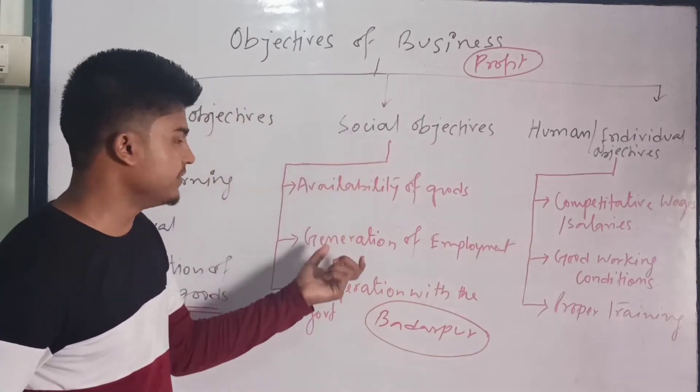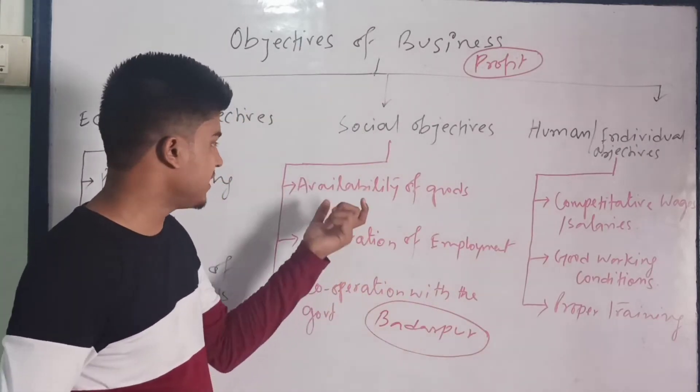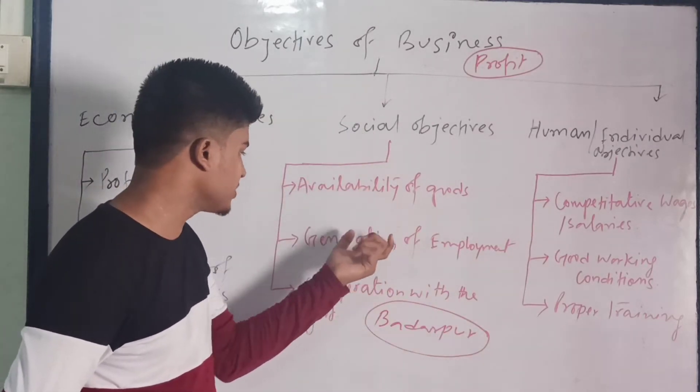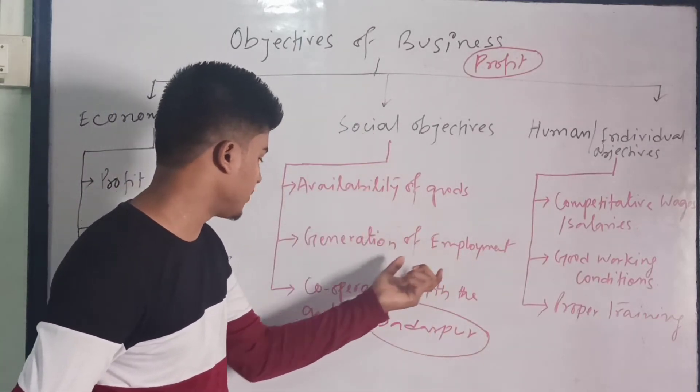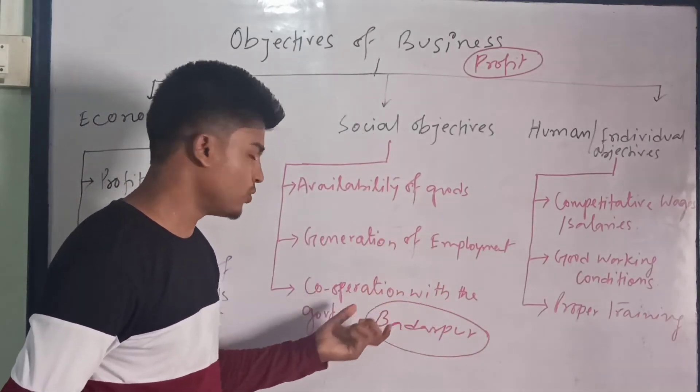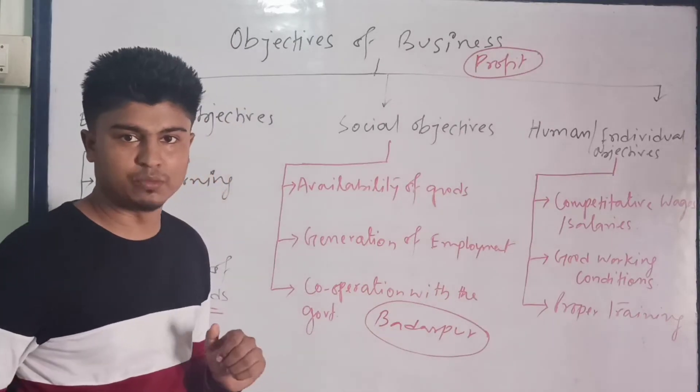Many times the government enacts various laws or regulations for the welfare or benefit of society as a whole. At that time, business should cooperate with the government in order to create a healthy environment and good atmosphere in society. So under social objectives: availability of goods, generation of employment, and cooperation with the government.